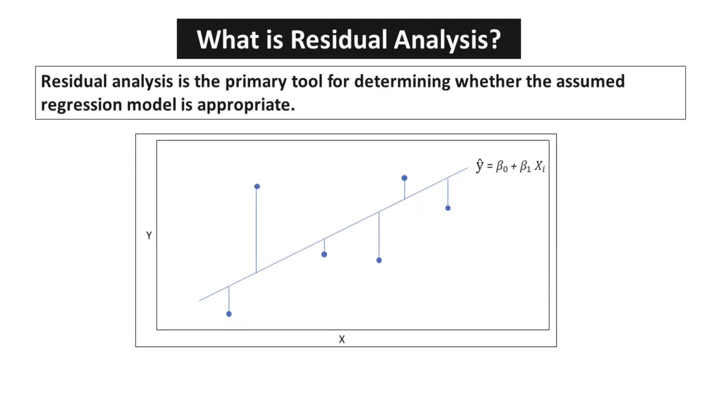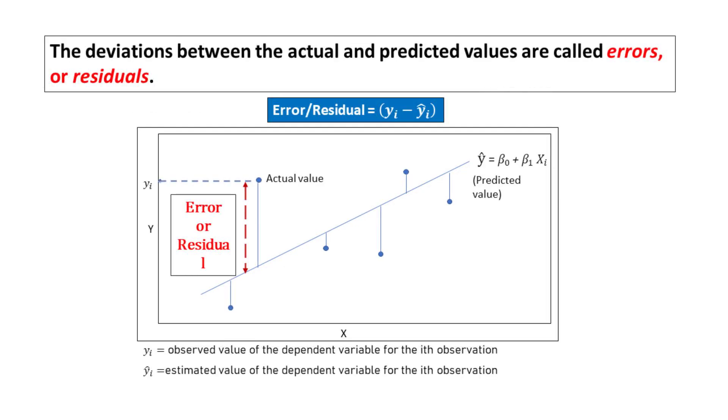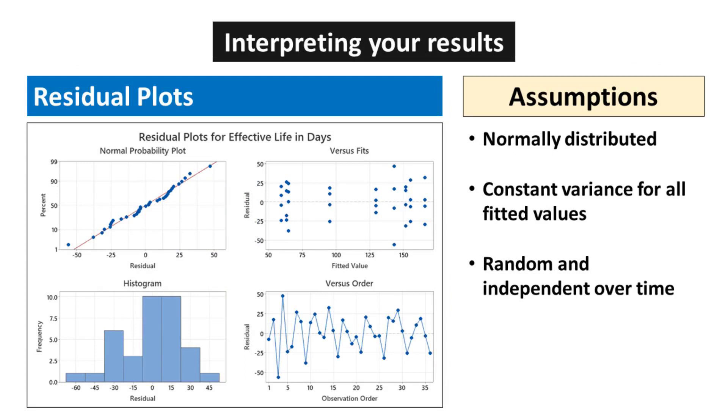Residual Analysis. Residual analysis is the primary tool for determining whether the assumed regression model is appropriate. The deviations between the actual and predicted values are called errors or residuals. You should examine residual plots and other diagnostic statistics to determine whether your model is adequate and the assumptions of regression are met. If your model is not adequate, it will incorrectly represent your data. There are three assumptions of error which are normally distributed, constant variance for all fitted values and random and independent over time.